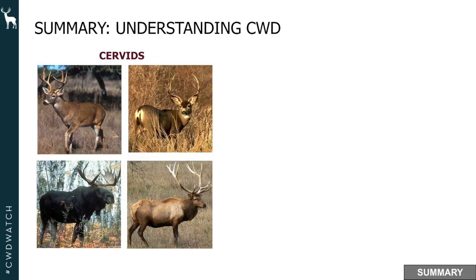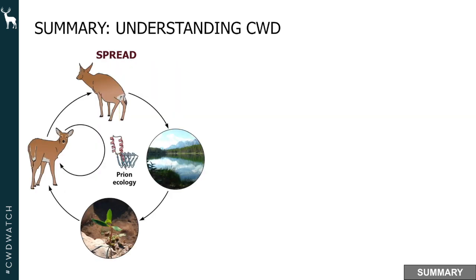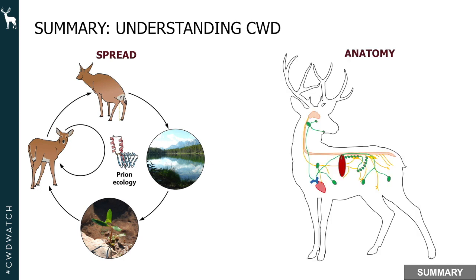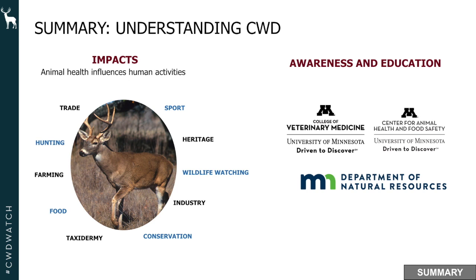In summary, when you hear CWD or chronic wasting disease, remember: it is a disease of cervids, caused by misfolded prion proteins, spread within and among deer and in the environment. Prions take advantage of the anatomy of the deer to reach and damage the brain — the most critical organ. The impacts on individual animals and populations have large ramifications for many human activities, which is why education, awareness, research, and resources matter for stopping the spread of this disease.